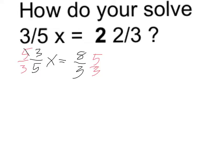Multiplying by that reciprocal, the 5s cancel, the 3s cancel, leaving me with x on the left-hand side, and on the right-hand side I get 8 times 5, which is 40, over 3 times 3, which is 9.